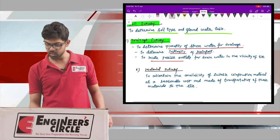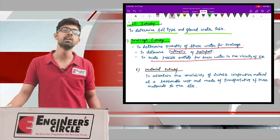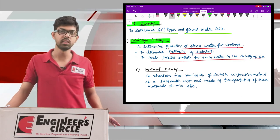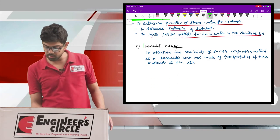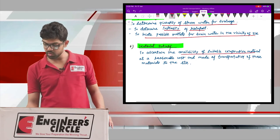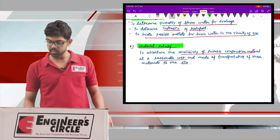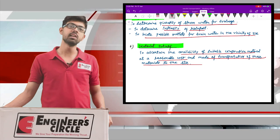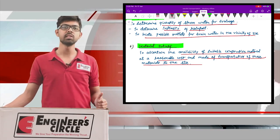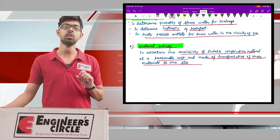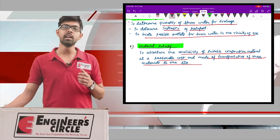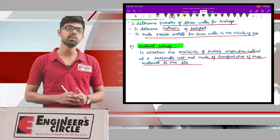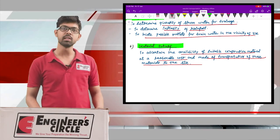The drainage survey also helps locate possible outlets for drainage water so the runway remains free from flooding. The last survey is the material survey, which determines the availability of suitable construction materials at a reasonable cost and the mode of transportation. You assess whether quarry and construction materials are available at the site itself or need to be transported from another location. All these surveys must be performed before selecting any site for airport construction.